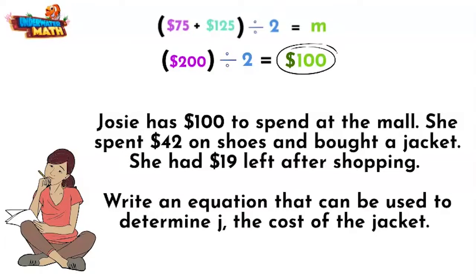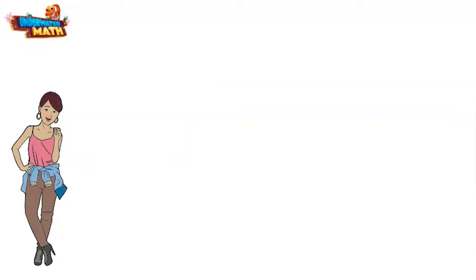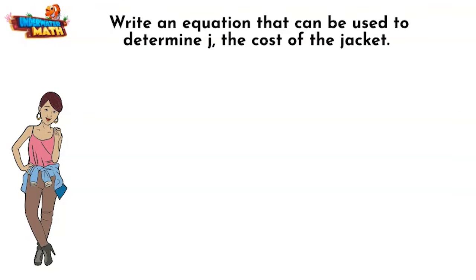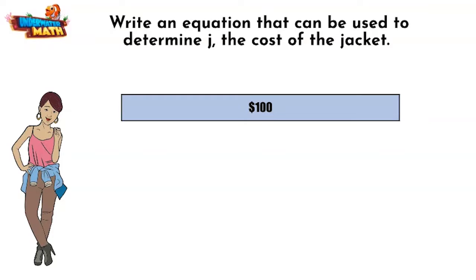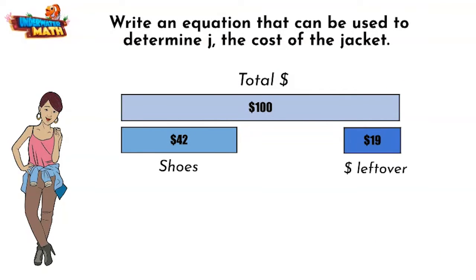A model can help us visualize this problem so that we can write out an equation. First we can draw a bar representing the total she has to spend, which is $100. Then we can draw out the sum of its parts. We have the shoes that cost $42, the money left over which is $19, and our unknown j which is the cost of the jacket.